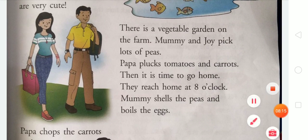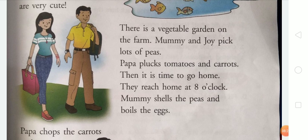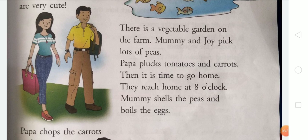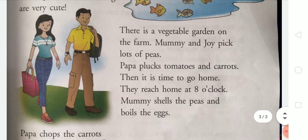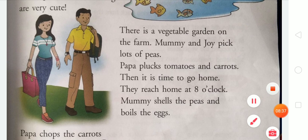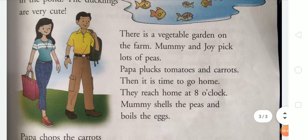There is a vegetable garden on the farm — jahan pe vegetables ugaaye jaate hain. Mummy and Joy pick lots of peas — bahut saari peas late hain. And Papa plucks tomatoes and carrots. Then it is time to go home.